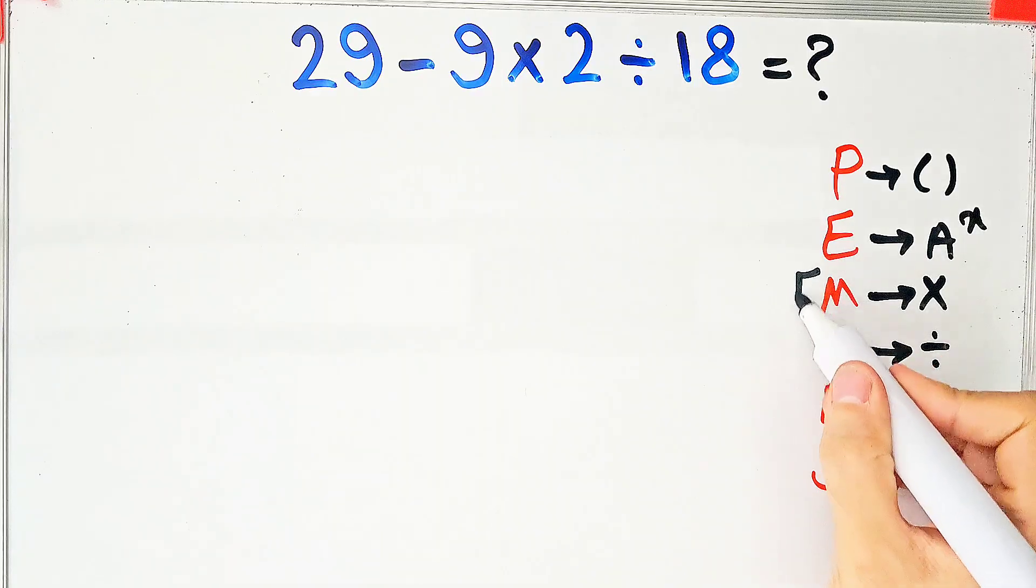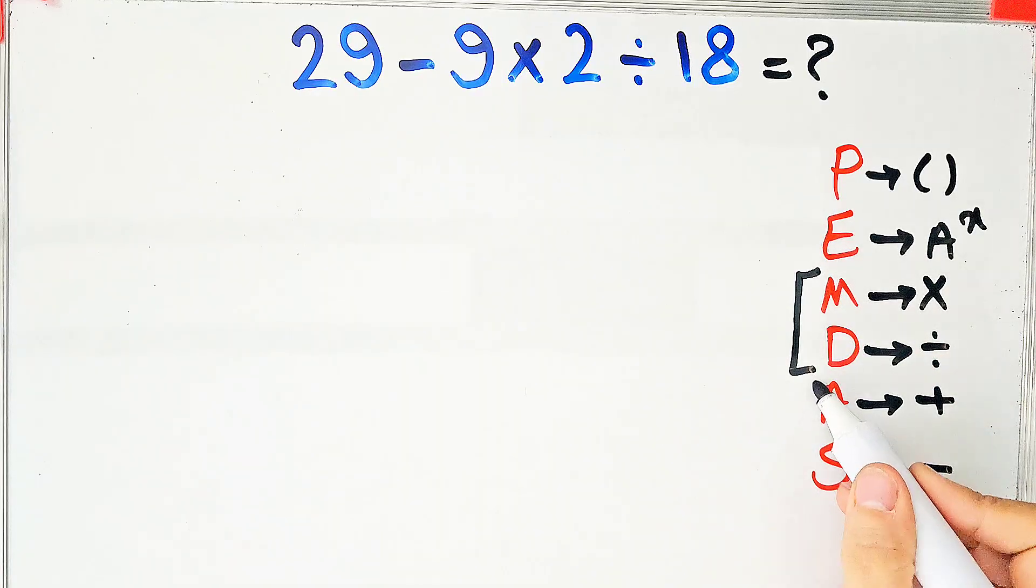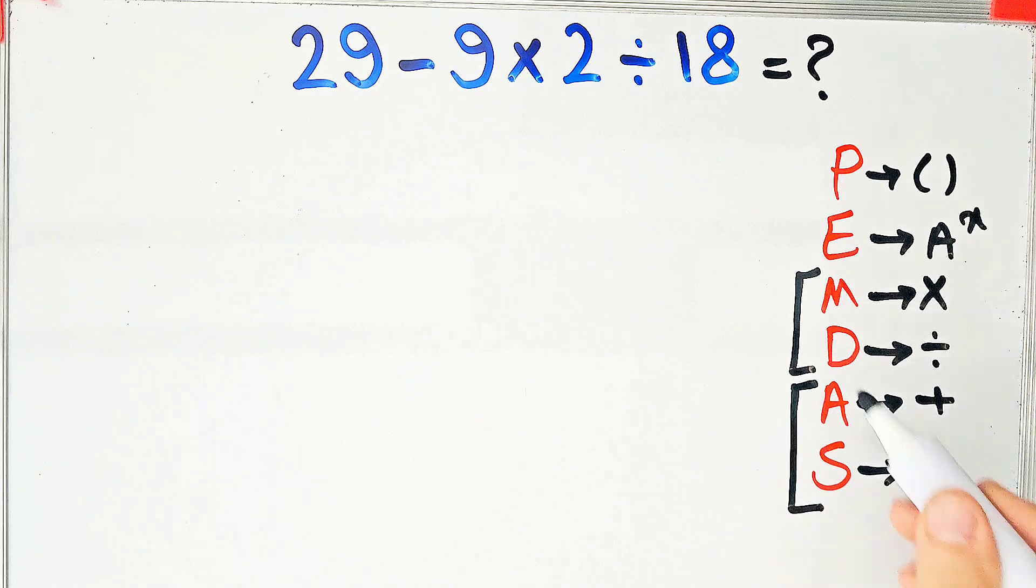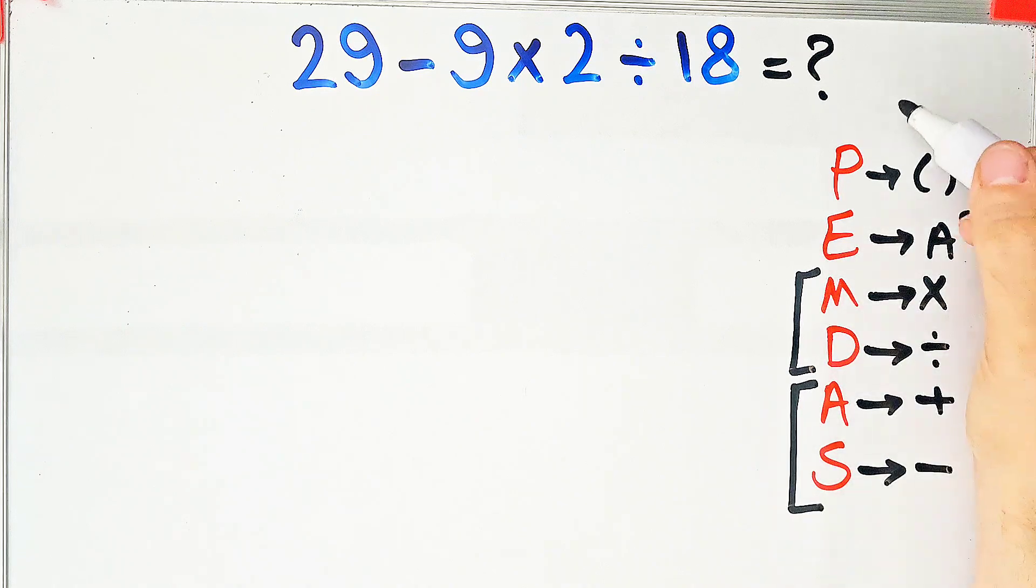Multiplication and division have the same level of priority, also addition and subtraction have the same level of priority. When we have both in an expression we start from the left and simplify the question.